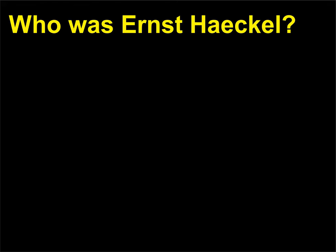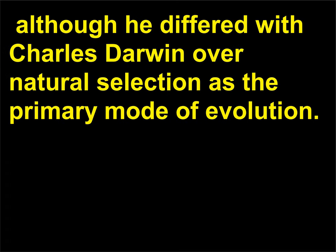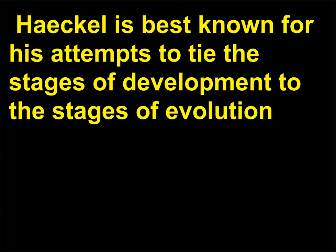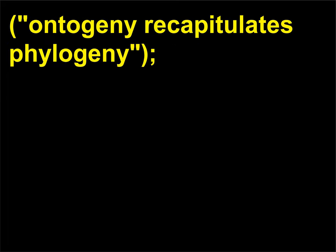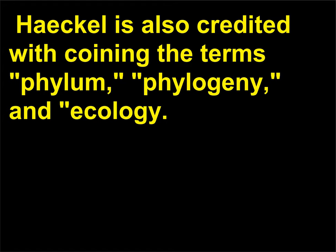Who was Ernst Haeckel? Ernst Haeckel, 1834-1919, was a physician who became a fervent evolutionist after reading On The Origin of Species, although he differed with Charles Darwin over natural selection as the primary mode of evolution. Haeckel is best known for his attempts to tie the stages of development to the stages of evolution. He is also credited with coining the terms phylum, phylogeny, and ecology.